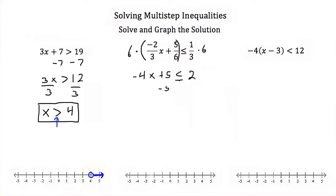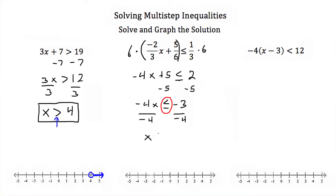Our next step will be to subtract 5 from both sides because we're trying to get x alone on one side of the inequality. If we do that, we'll have negative 4x has to be less than or equal to negative 3. Then our last step will be to divide both sides by negative 4. Negative 4x divided by negative 4 is a positive x. But if we divide both sides of an inequality by a negative number, we have to reverse our inequality sign. So less than or equal to becomes greater than or equal to, and negative 3 divided by negative 4 is just positive 3/4.